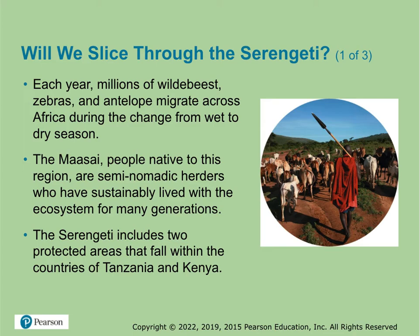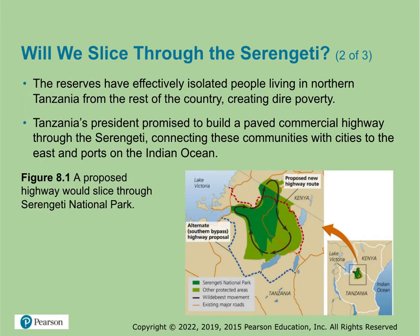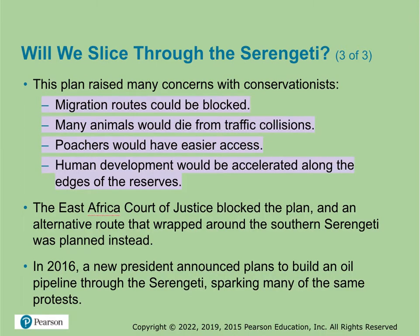Your book talks about at the beginning that there was a road planned to go through the Serengeti, and gives you all the reasons why that would be a bad idea for several of the groups, animals, and wildlife that are there.